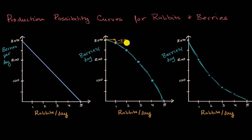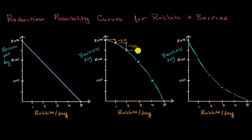That second rabbit is a little harder to catch, and I'm not giving up the quite-so-hard-to-pick berries. So when I hunt that next rabbit, I've given up 40 berries — my opportunity cost has increased. For the first rabbit it was 20 berries; for the second rabbit it's 40 berries. And it keeps going: the third rabbit I give up 60 berries, the fourth rabbit I give up 80 berries.